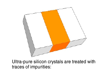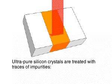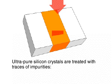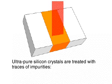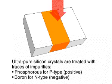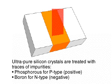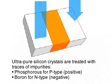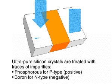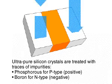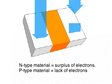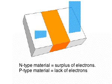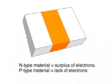The individual layers are formed by treating pure silicon with trace amounts of impurities. Adding boron will create N-type material, phosphorous P-type material. N-type material will have a surplus of electrons, whereas P-type material will have a lack.